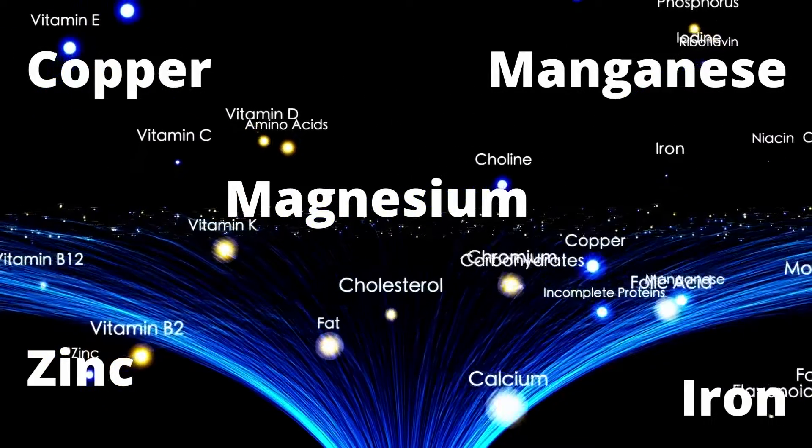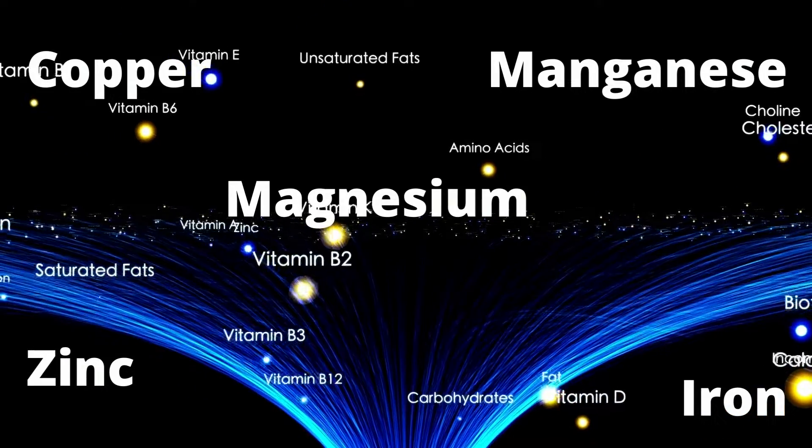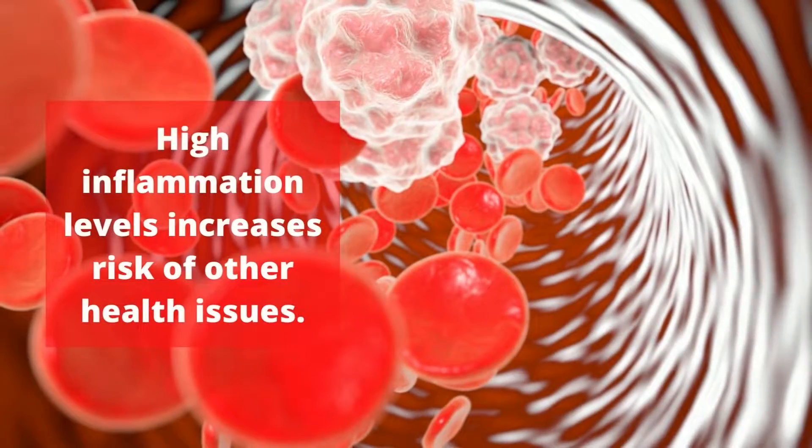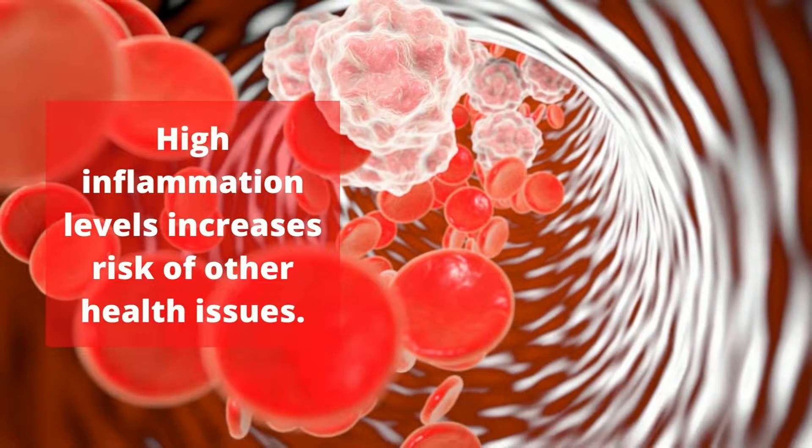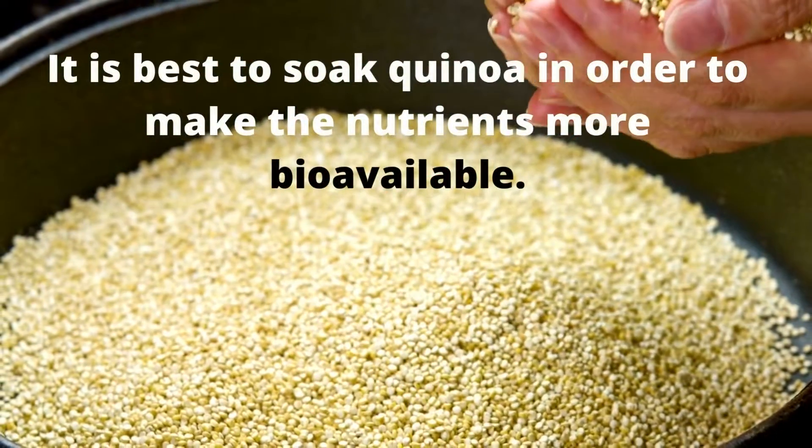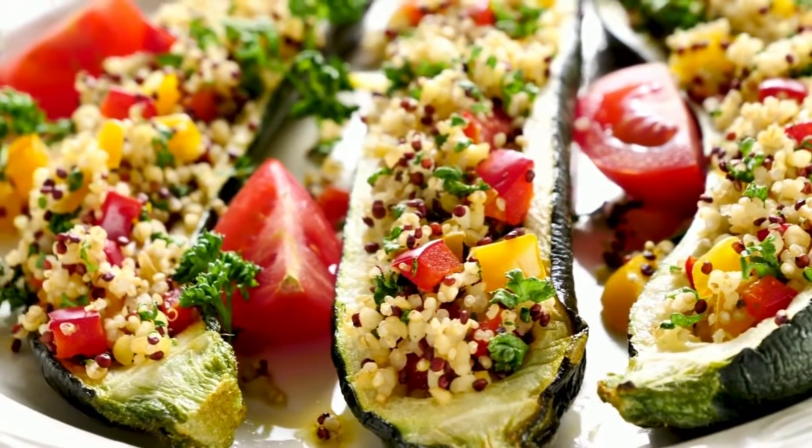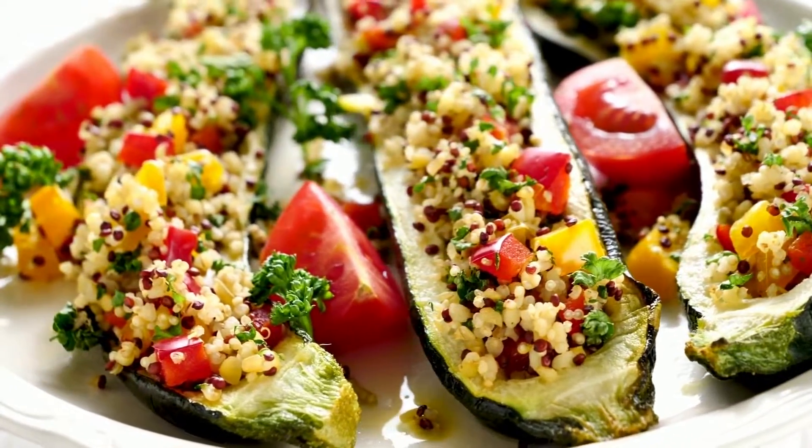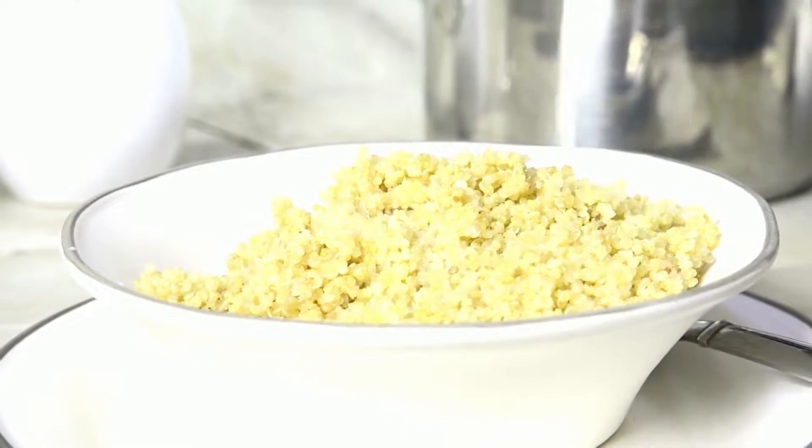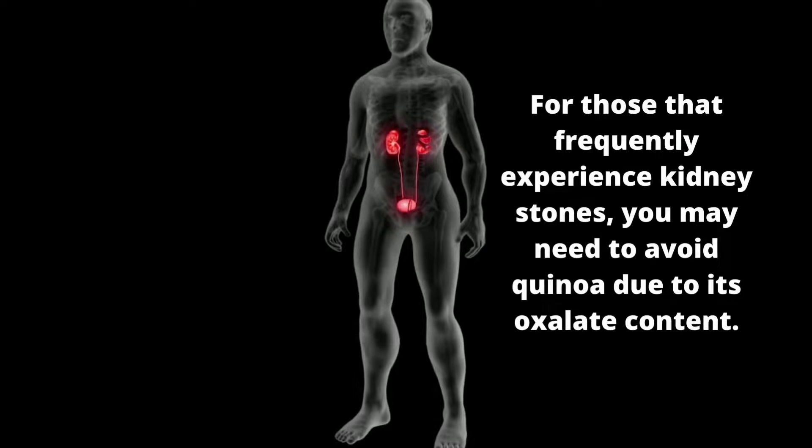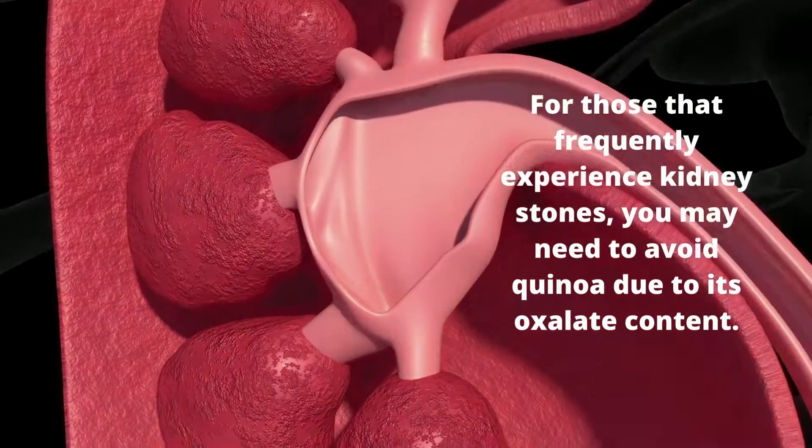Quinoa provides a healthy dose of anti-inflammatory antioxidants, quercetin and kaempferol. When blood inflammation levels are high, it increases your risk of autoimmune conditions and other health issues. Now, it is best to soak quinoa in order to make the nutrients more bioavailable. Eat it like rice, stuff quinoa in grilled zucchini, add it to a tasty chicken salad or have it for a protein enriched breakfast. For those that frequently experience kidney stones, you may need to avoid quinoa due to its oxalate content.